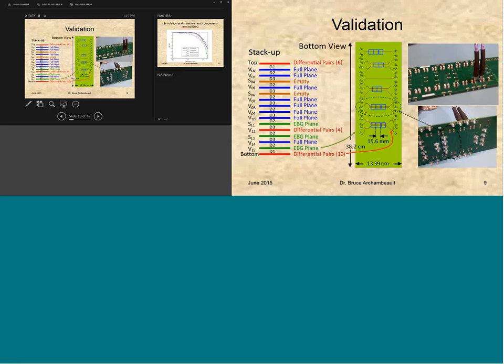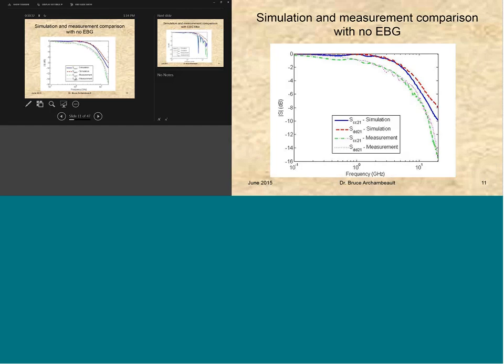We did some validation. You can see the pictures here of the printed circuit board that we built. And some of the structures that we built there are shown in the middle. We had EBG with three sections or two sections. We had multiple differential pairs crossing or just a single differential pair crossing. All different kinds of options here.